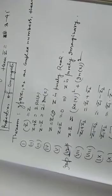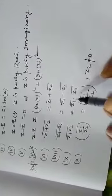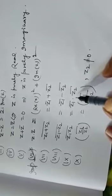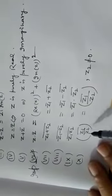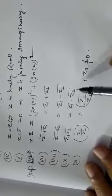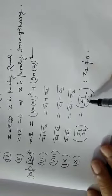Property 5: z1 plus z2 bar is equal to z1 bar plus z2 bar separately. Similarly, z1 minus z2 bar is equal to z1 bar minus z2 bar separately. And also, the conjugate of the product of two complex numbers z1 and z2 is equal to the product of their conjugates separately — that is, conjugate of z1 times conjugate of z2, where z2 is not equal to zero.